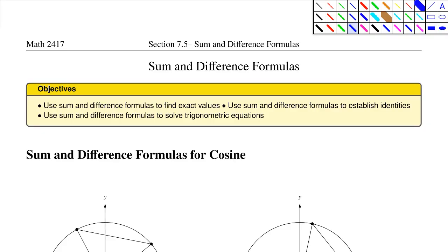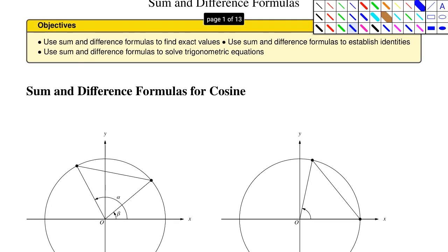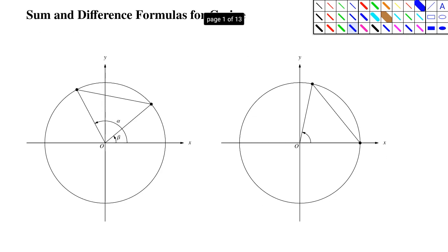In section 7.5 we look at the sum and difference formulas for trigonometric functions. The first thing we want to do is develop one of these functions. It's important for you to see where these come from. It will not be tested on, but as always we want you to know the origin of these things.